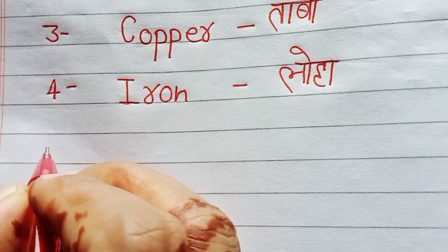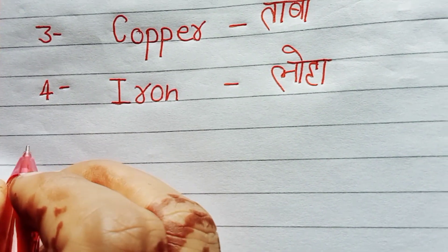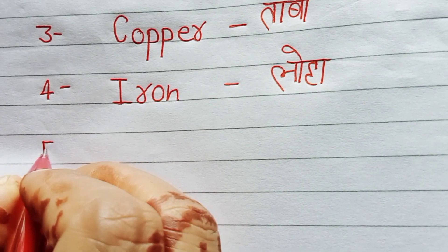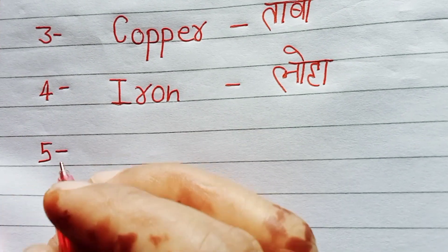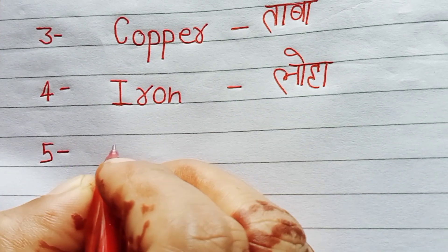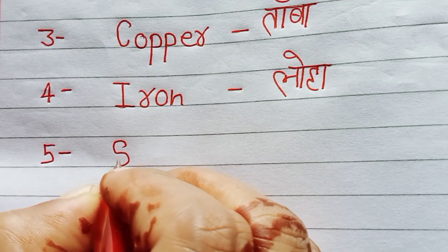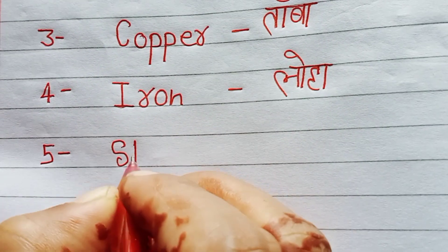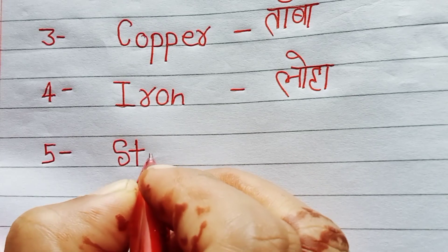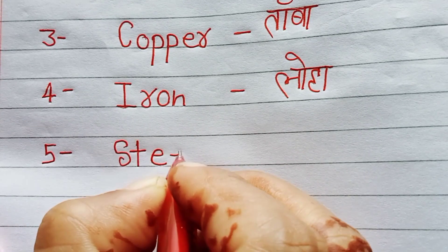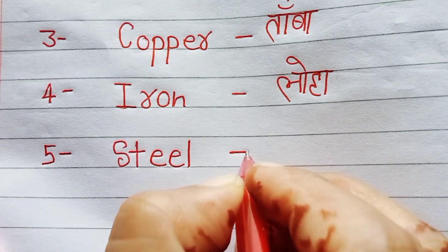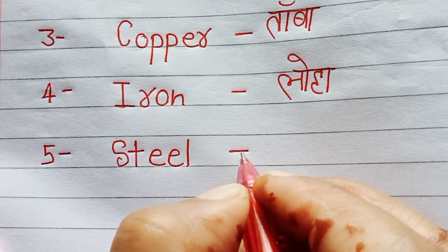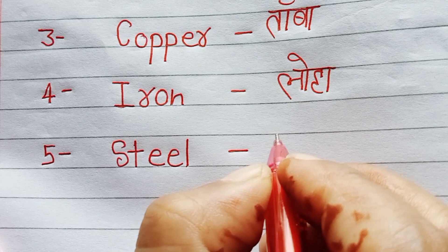5th number is Steel. S, T, E, E, L. Steel. Steel means Spark.